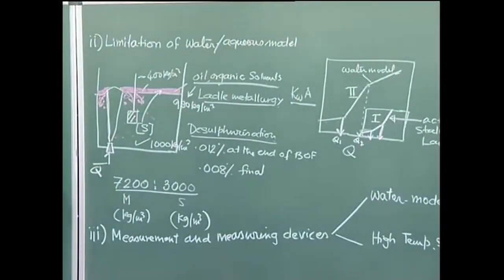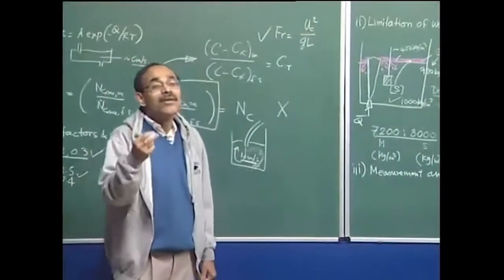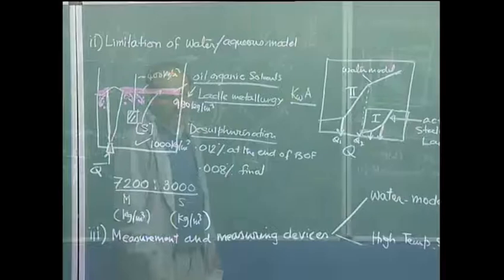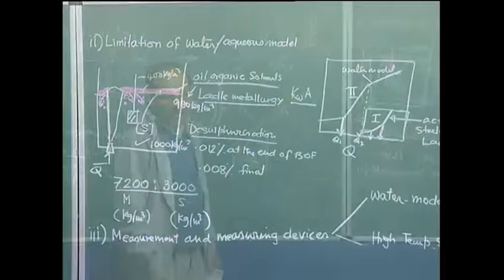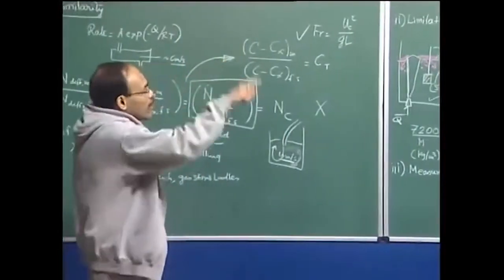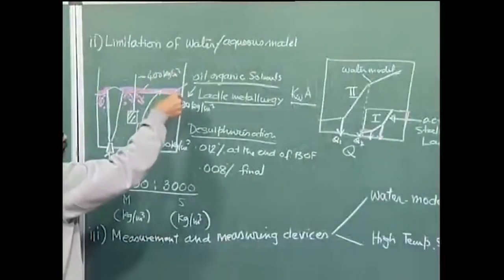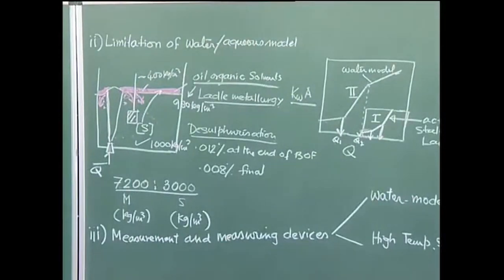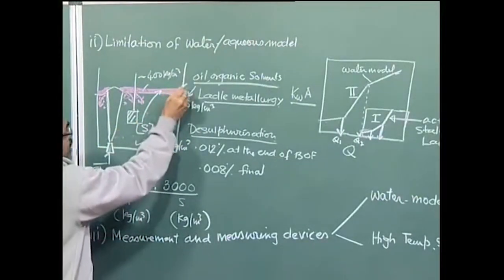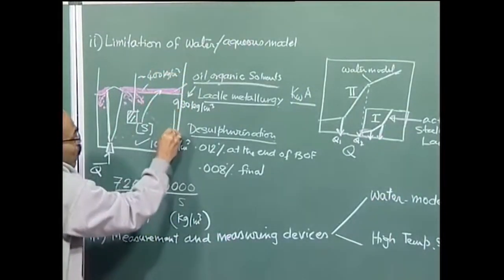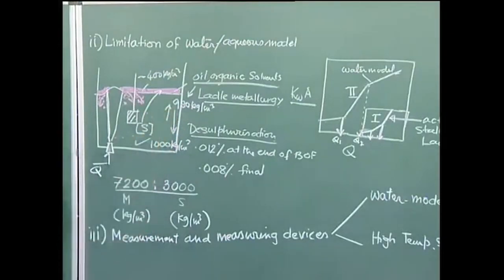How do you visualize flow? We can add some tracer elements into the water. The tracer element may be a coloring agent such as potassium permanganate. If you drop potassium permanganate into water from the top, you will be able to see how it disperses in the system, giving you an idea of the overall flow pattern. You can also inject potassium permanganate with a syringe at a particular region to find out whether the flow near the wall is vertically downward or vertically upward.